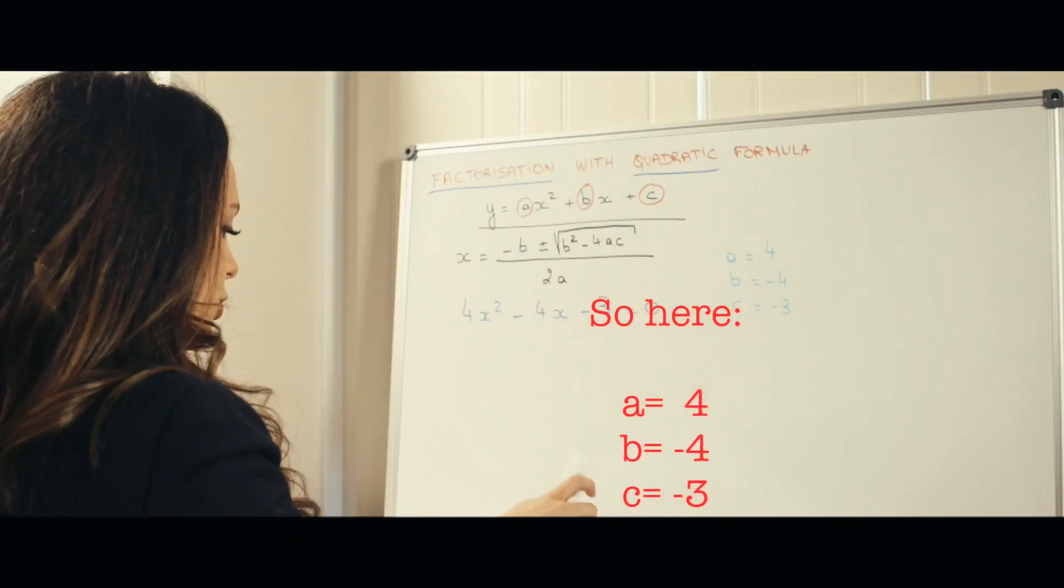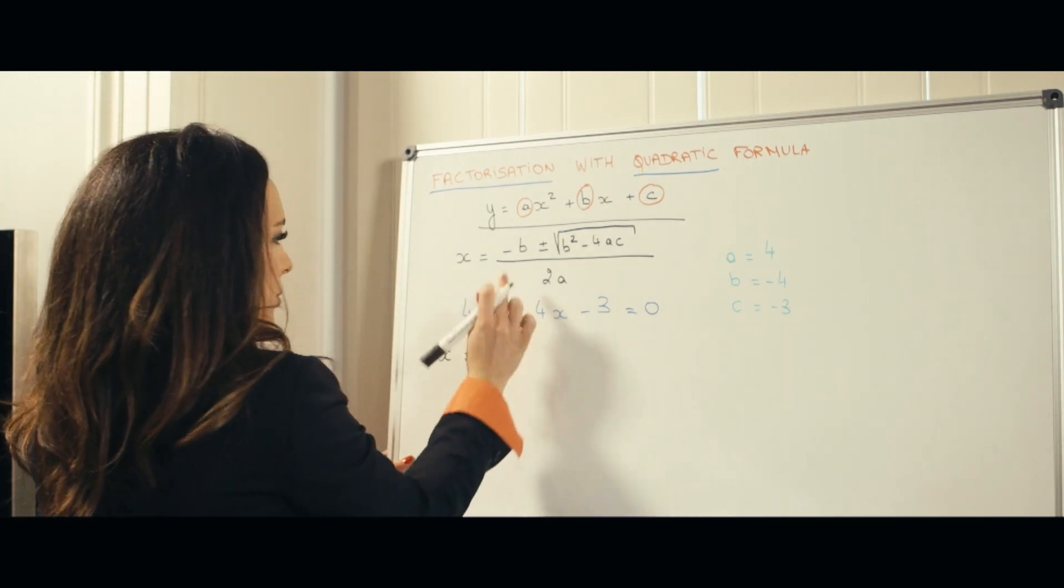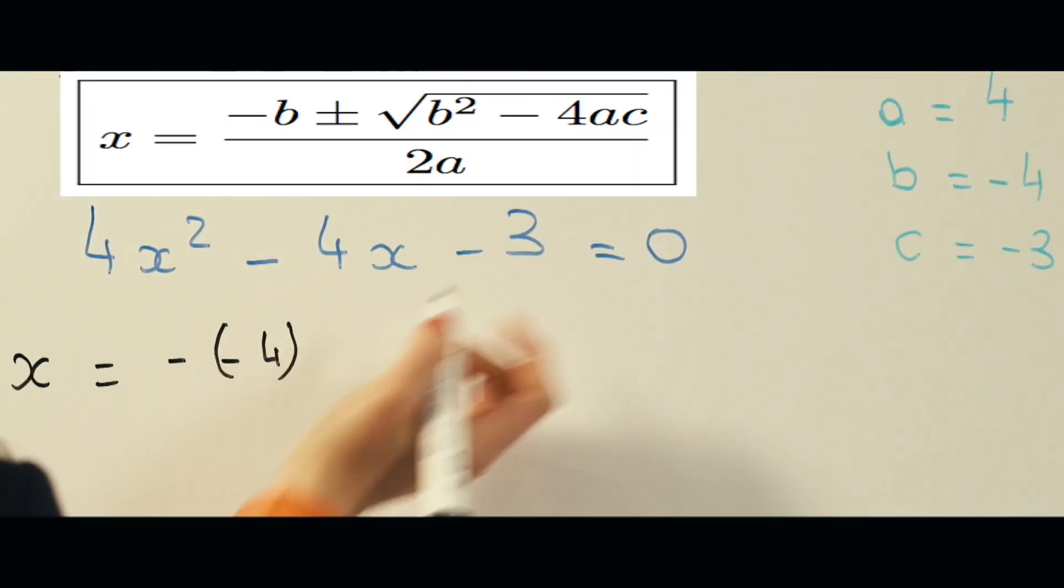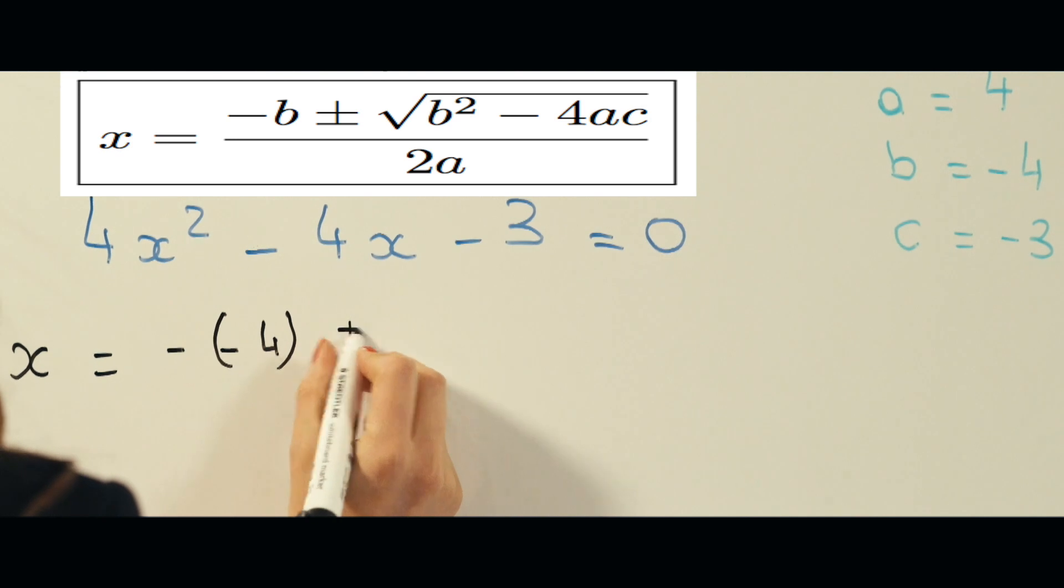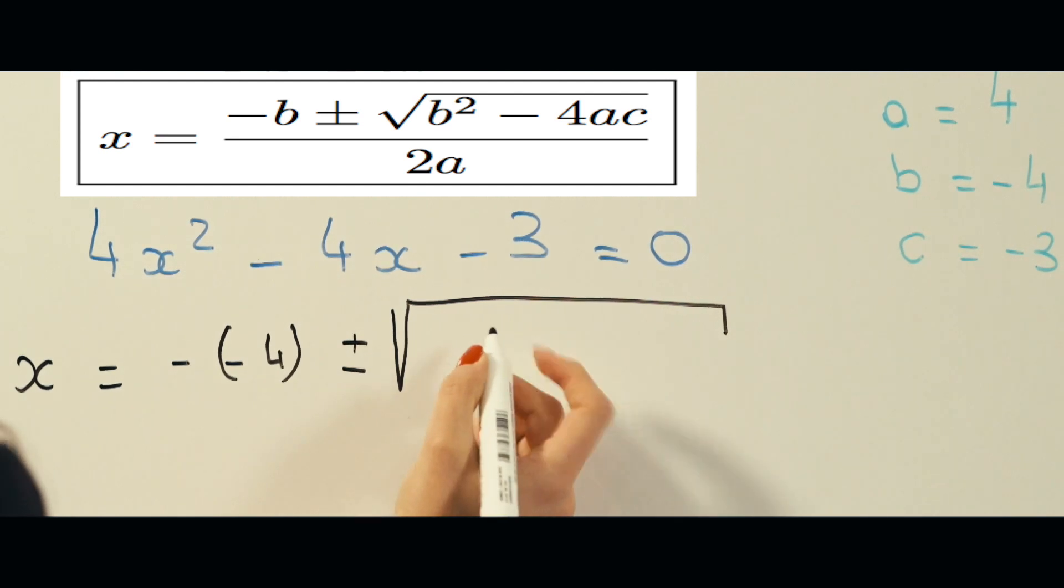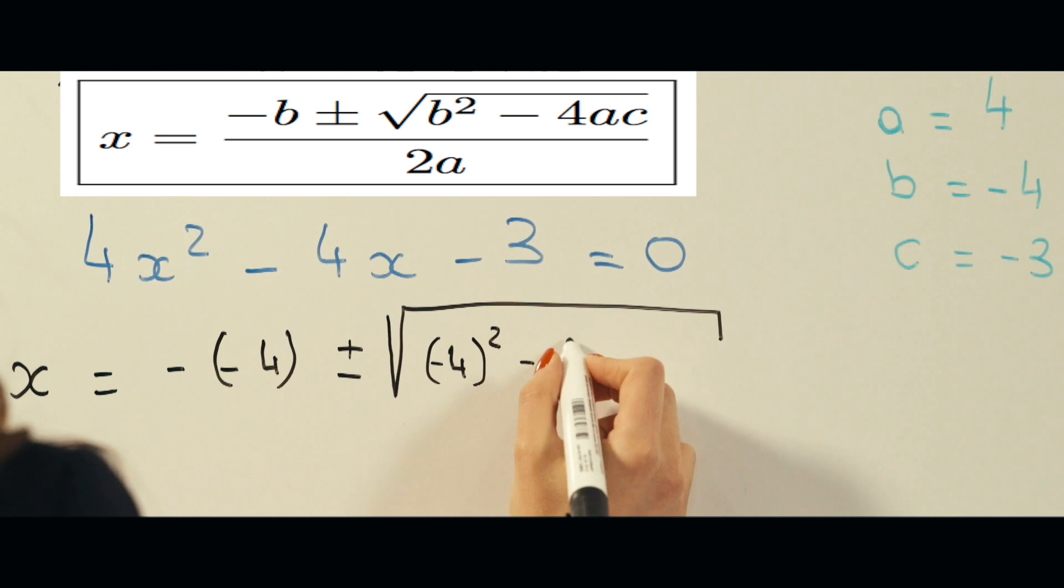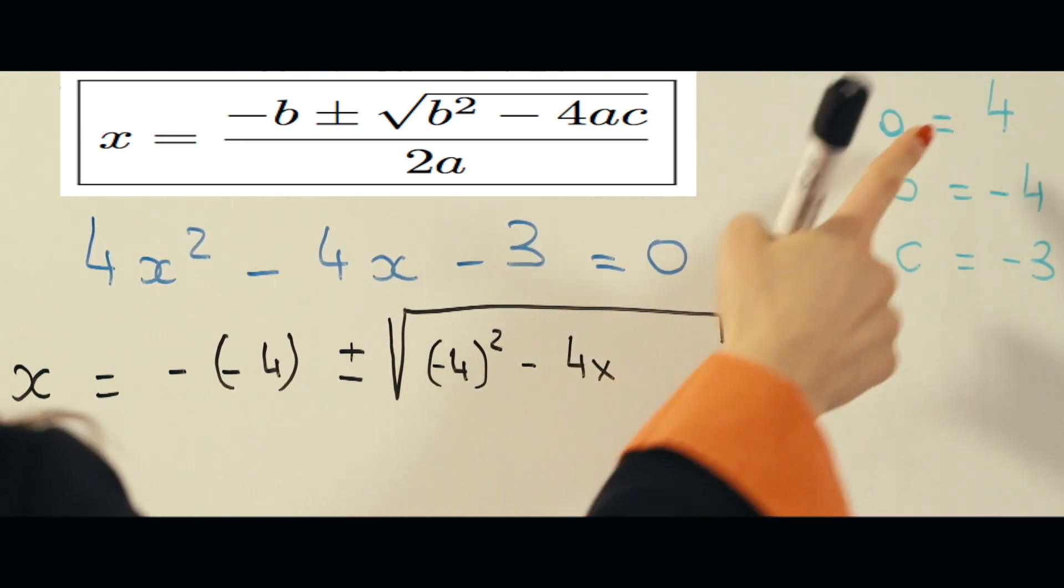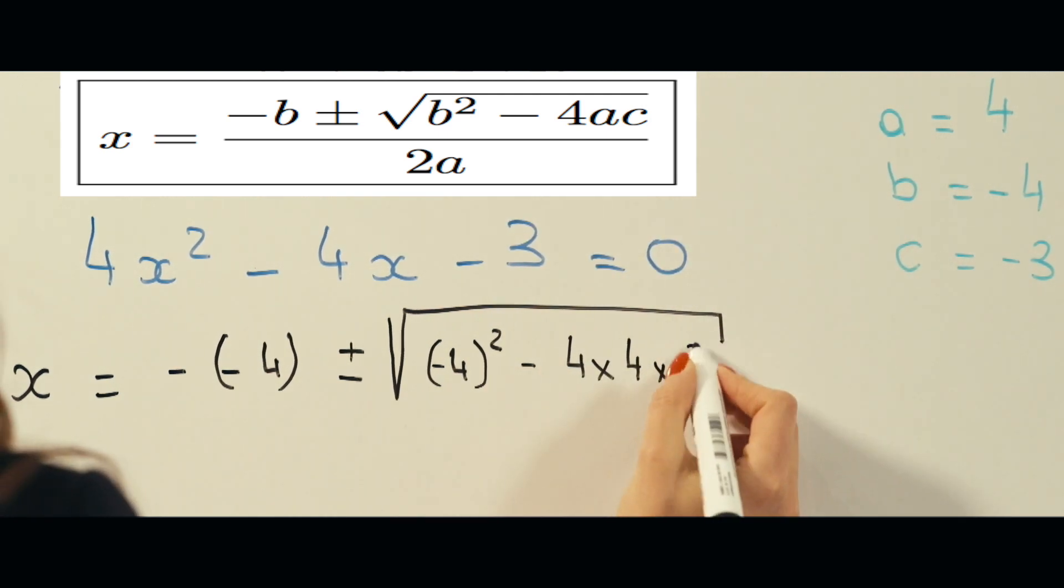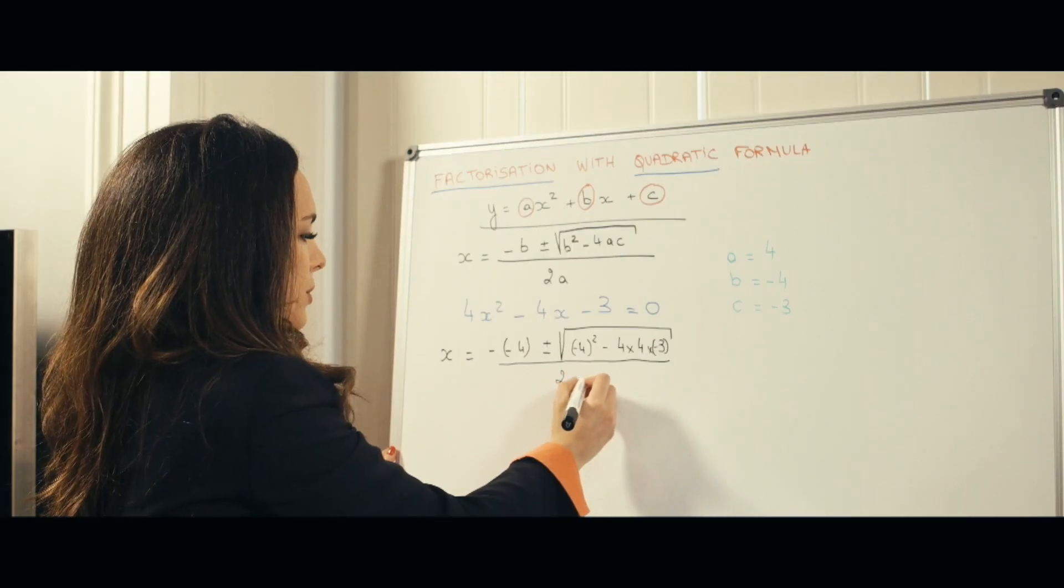So the solutions for x are: x equals minus b, which is minus minus 4 because b is minus 4, plus or minus square root of b squared, which is minus 4 squared, minus 4 times a, which is 4, times c, minus 3, divided everything by 2 times 4.